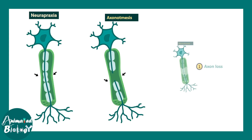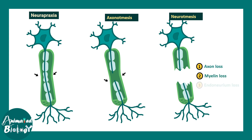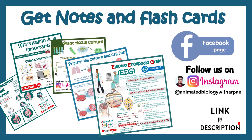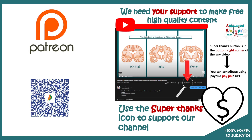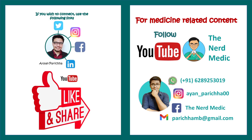I have a detailed video on types of nerve injury, including neuropraxia, axonotmesis, and neurotmesis. You can watch that video by clicking on the link provided in the description or the info button. I hope this video was informative and medically relevant. If you liked this video, don't forget to follow us on Facebook or Instagram. Support our channel using Super Thanks — you can pay via Paytm, PayPal, or UPI. See you in the next video.